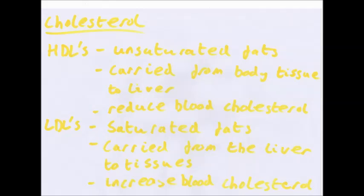There are two types of lipoprotein: high-density lipoproteins (HDLs) and low-density lipoproteins (LDLs). HDLs are unsaturated fats with a lot of protein and carbohydrates. They are carried from body tissue to the liver. The liver cells have HDL receptors, so the HDLs bind with them and are broken down to make bile. HDLs carry away cholesterol, so they reduce blood cholesterol — they're good. That's why it's considered good to have unsaturated fats.